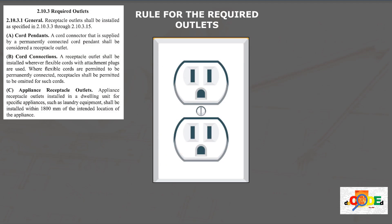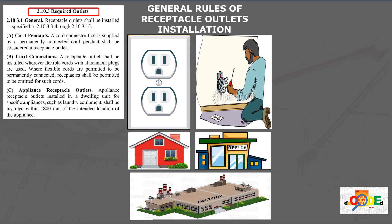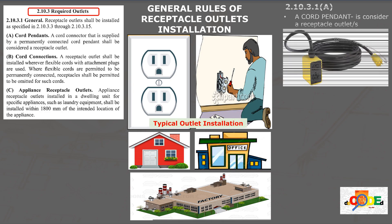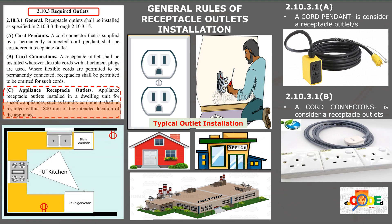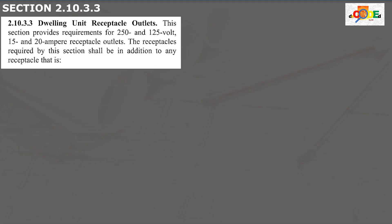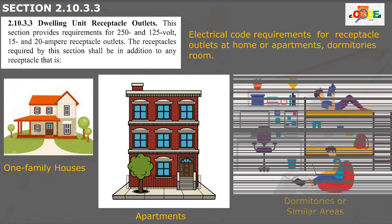What are the code rules for the provision of receptacle outlets? In section 2.10.3, Required Outlets, this section covers the general rule that applies to the installation of receptacle outlets in any type of occupancy or premises. The code also permits cord pendant and cord connection outlets as receptacle outlets. An outlet dedicated to specific appliances in dwelling units shall be installed within 1,800 mm from the intended location of the appliance. For dwelling unit requirements, we refer to subsection 2.10.3.3, which sets forth rules for one-family residential units, apartments, dormitories, and similar areas.